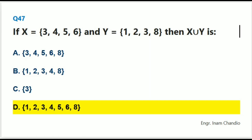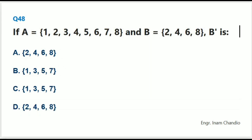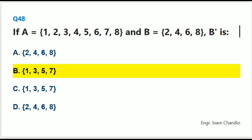If A = {1, 2, 3, 4, 5, 6, 7, 8} and B = {2, 4, 6, 8}, then B' (complement) is: The correct answer is B. {1, 3, 5, 7}.